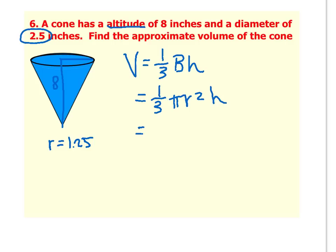So plugging in the numbers, 1 third times pi times 1.25 squared times 8. You can put it in your calculator. Approximate answer should be 13.1, and this would be cubic inches.